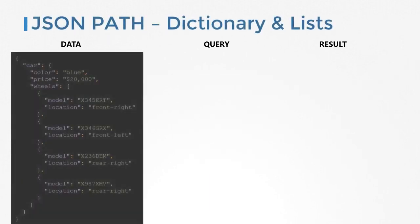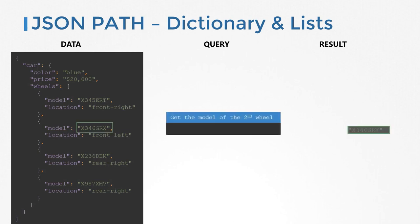Let us now look at dictionaries and lists. Here I have data of a car with properties color, price, and wheels. Wheels is a list that has four items in it, each one being a dictionary. Say we have a goal to retrieve the model of the second wheel of the car. Our query starts with a dollar symbol for the root element. The root element is a dictionary denoted by curly braces, so we know our query starts with a dot following the dollar symbol. Within the root dictionary, we have the car dictionary. Within car, we have wheels. We want just the second wheel, so we use square brackets and specify position one, since the index starts at zero.